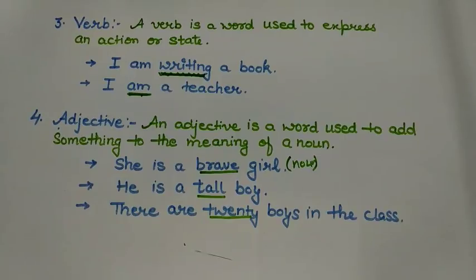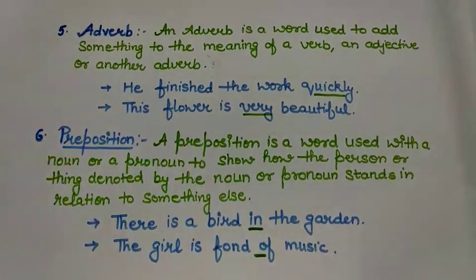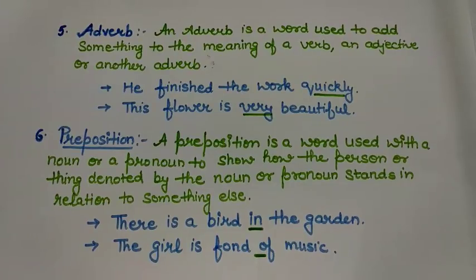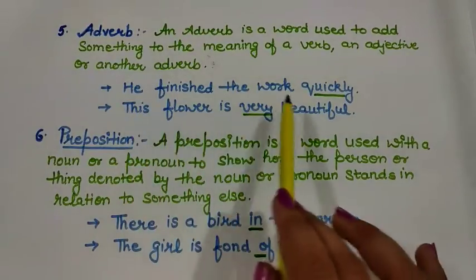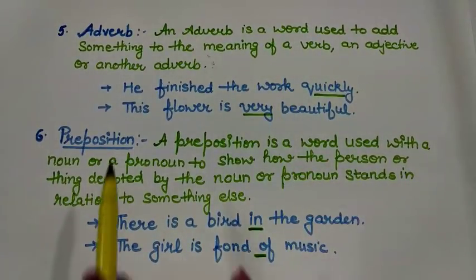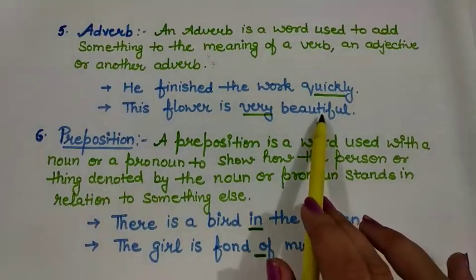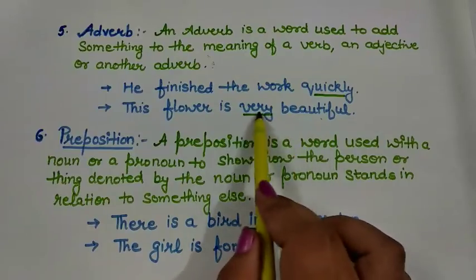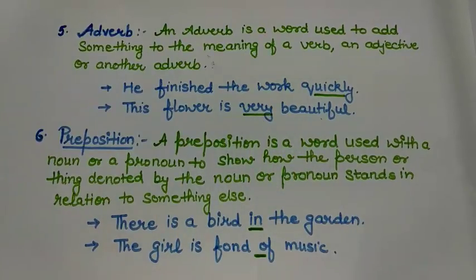Coming to the next part of speech — adverb. An adverb is a word used to add something to the meaning of a verb, an adjective, or another adverb. Please don't get confused between adjective and adverb — both are quite different. For example, 'He finished the work quickly' — 'quickly' is an adverb used for the verb. 'This flower is very beautiful' — 'very' is used to enhance the description, so such words are called adverbs.